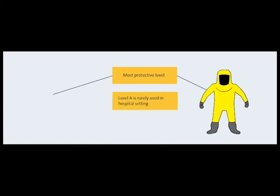Level A consists of a fully encapsulating suit and a supplied air respirator. It is the most protective level and is often worn by on-scene hazmat responders. Level A is rarely used in the hospital decontamination setting.